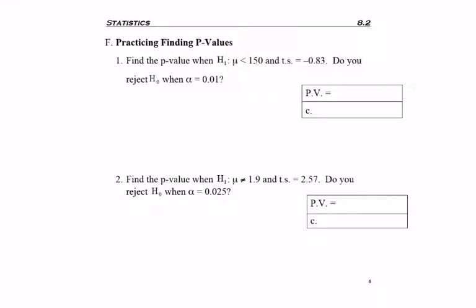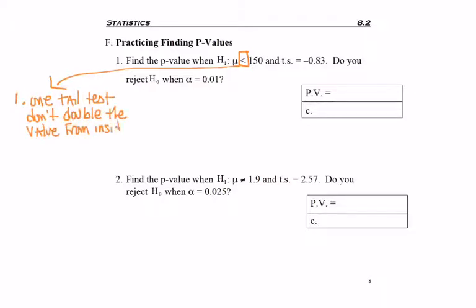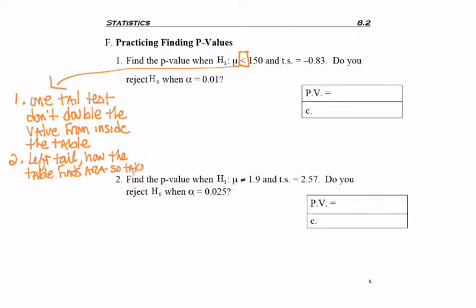The first thing I want to know is what type of test I have. In this case, because I have the less-than symbol, that tells me I have a one-tail test, so I do not double the value from inside the table. And it tells me I have a left-tail test, which is how this table finds area. So I'm just going to get a number from inside the table and leave it that way.